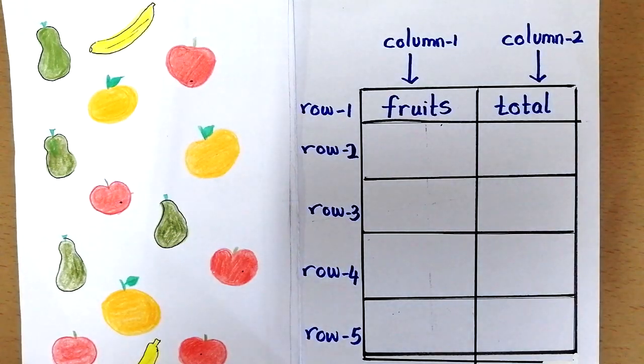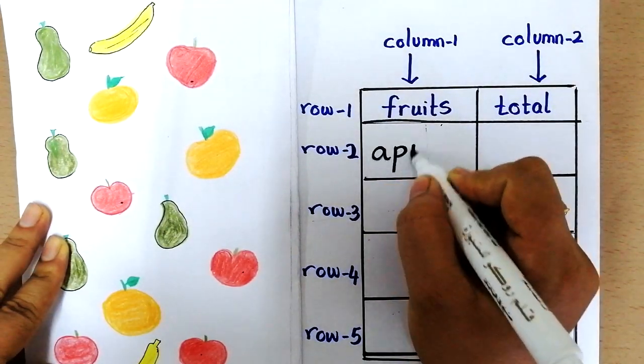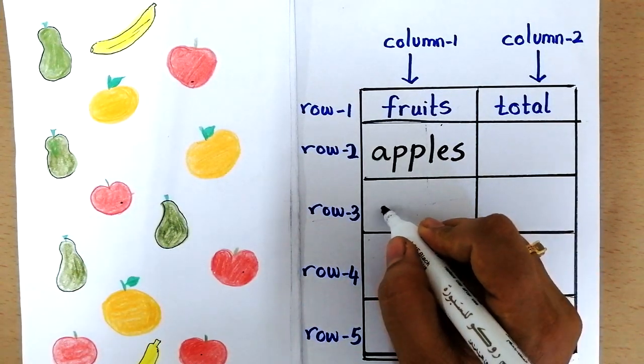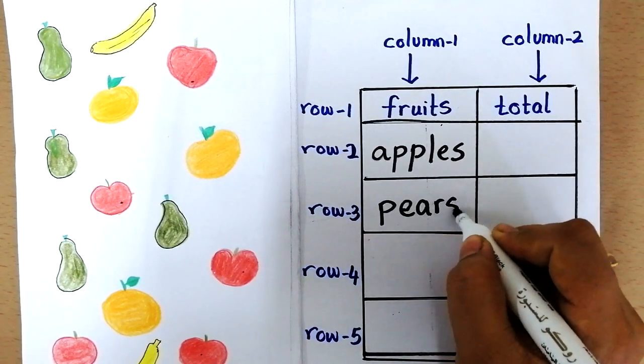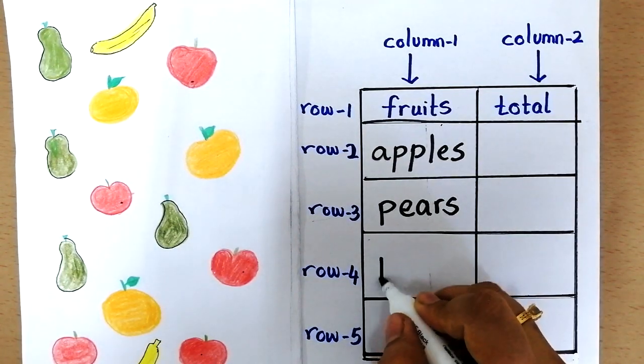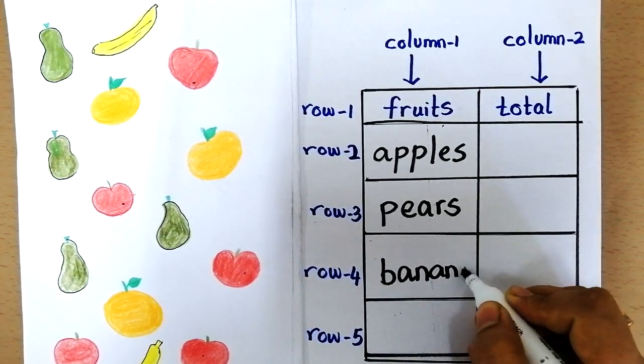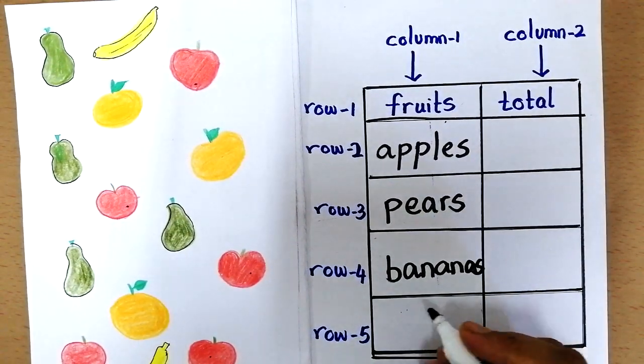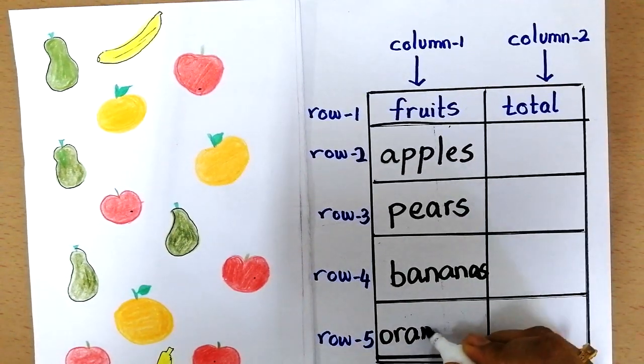So let us write the name of the items. First one is apples, second pears, third one bananas, and the last one oranges.